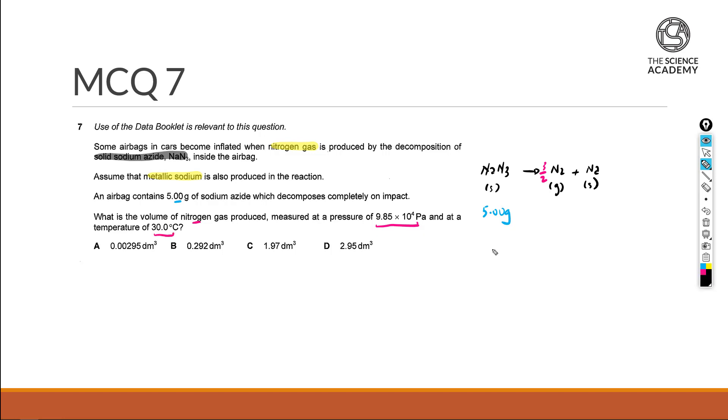Let's just do some mole calculation work. First, the number of moles of sodium azide will be equal to 5 divided by 65 and using the ratio of 1 is to 3 over 2, let's use this to find out the number of moles of nitrogen.